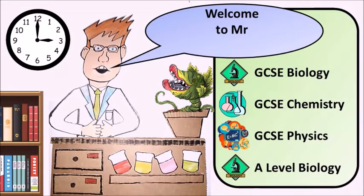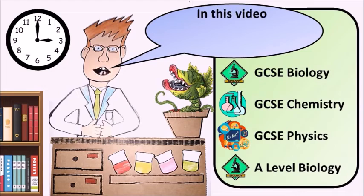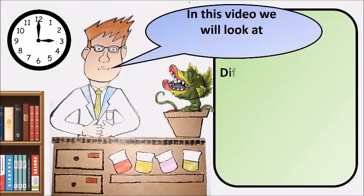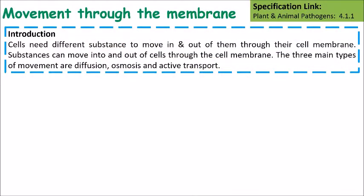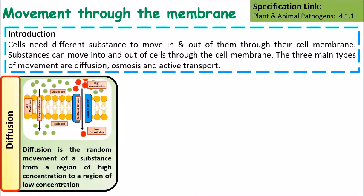Welcome to Mr. Chalk's revision tips. In this video we will look at diffusion, active transport and osmosis. Cells need different substances to move in and out of them through their cell membranes. The easiest way to do this is by diffusion.